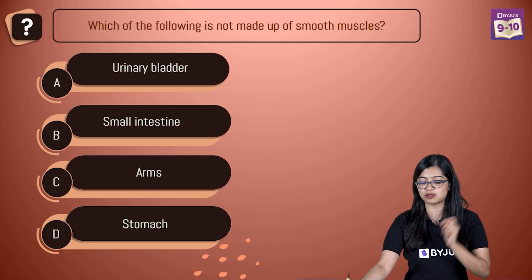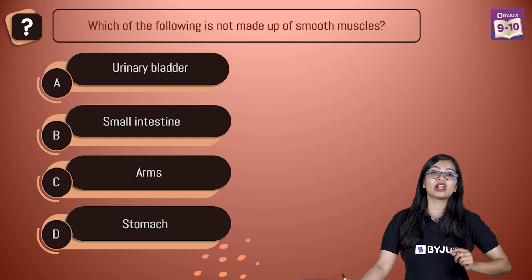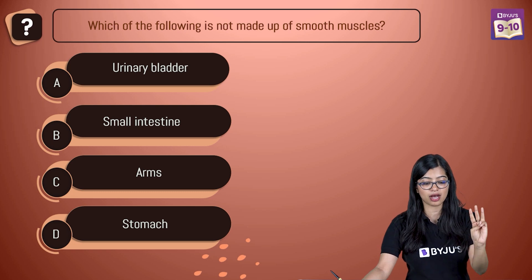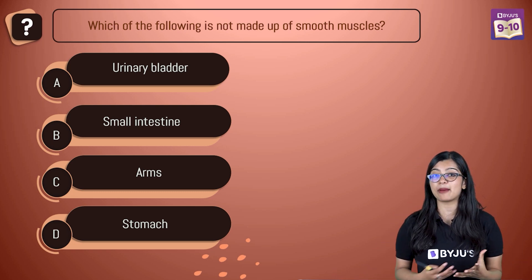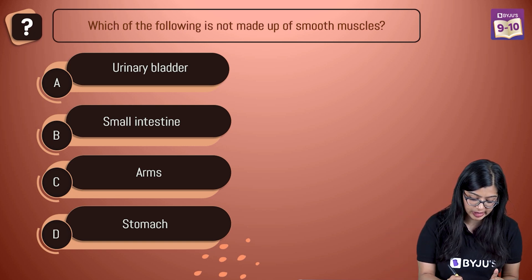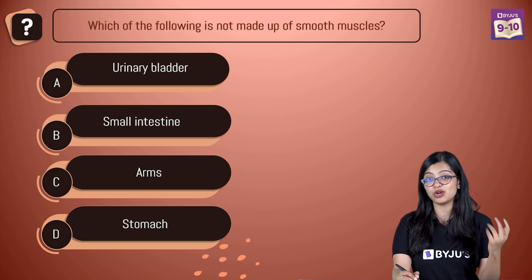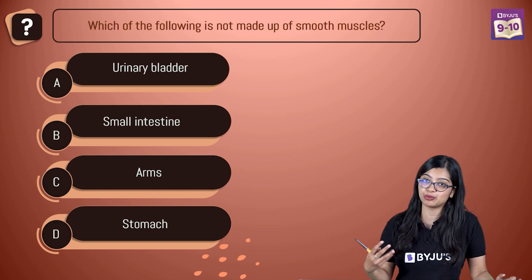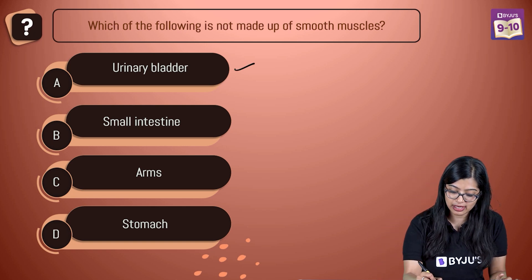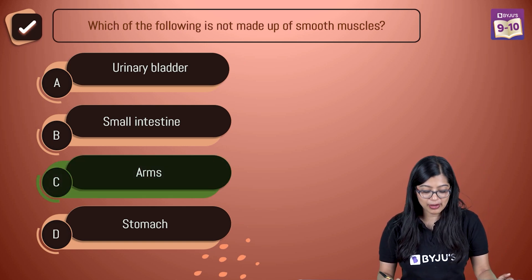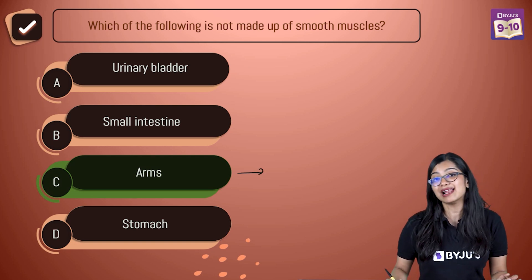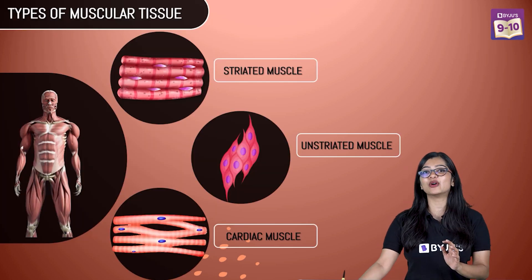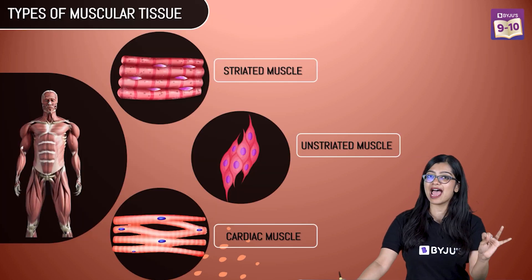Quick recap question: which among the following is not made up of smooth muscles — urinary bladder, small intestine, arms, or stomach? Smooth muscles are made up of spindle-shaped uninucleate cells with no striations, found in the walls of blood vessels and hollow tubular organs like the urinary bladder, small intestine, and stomach. But in the arms, skeletal or striated muscles are present. So the answer is arms.